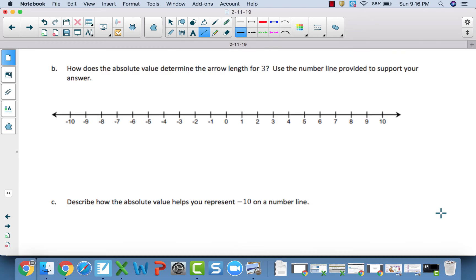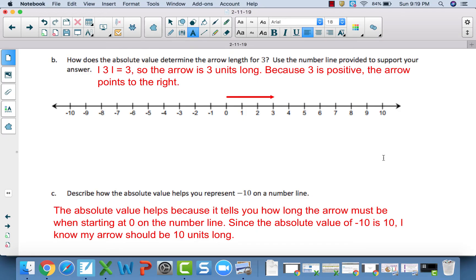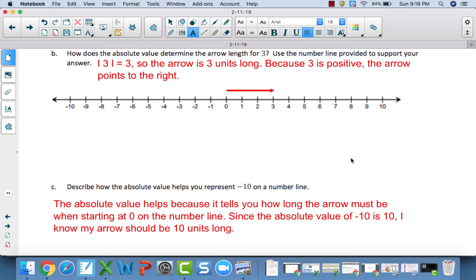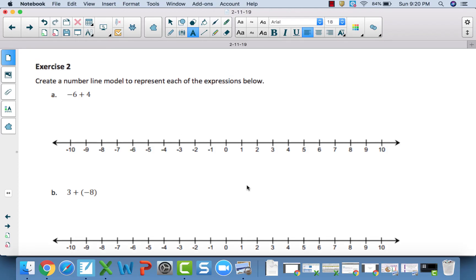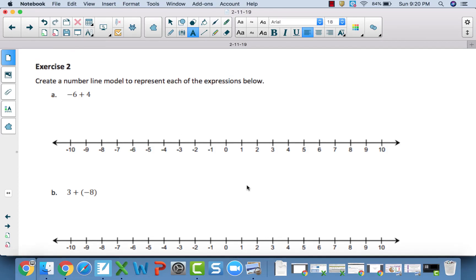So, why don't you go forward and answer parts B and C on your own, and then check back with the video once you've done so. For B, the absolute value of three is three, so that tells you your arrow is three units long, and because three is positive, the arrow points to the right. You see the number line supporting that reasoning by having an arrow that's three units long to the right. Now, C, how would absolute value help you represent negative ten on a number line? The absolute value helps, because it tells you how long the arrow is going to be when you start at zero. Since the absolute value of negative ten is ten, I know the arrow when I go to draw this vector onto my number line will be ten units long. All right, so go ahead and attempt exercise two, questions A and B, and then come back and check the video so we can move forward into some more examples.